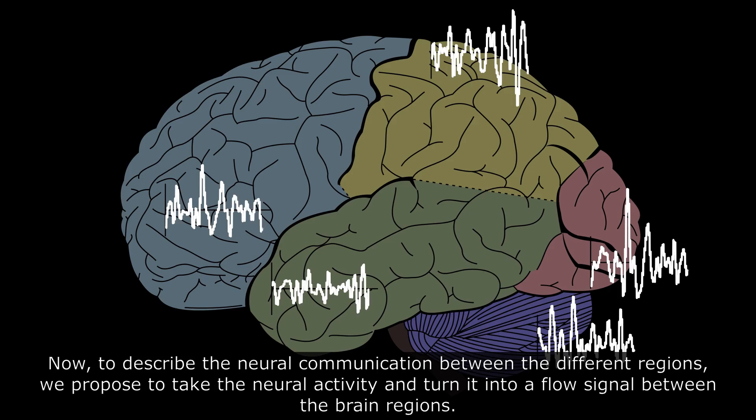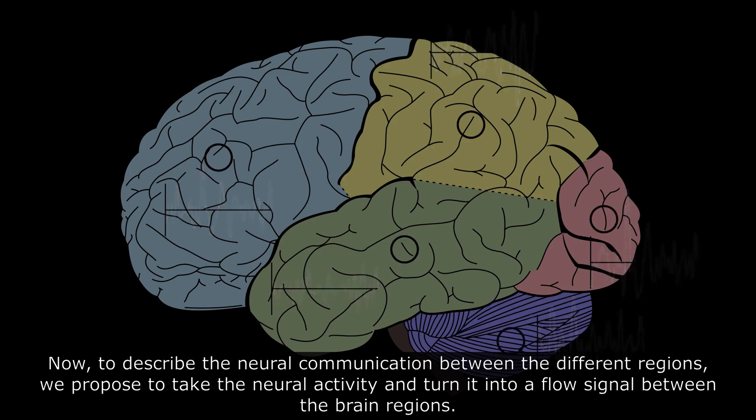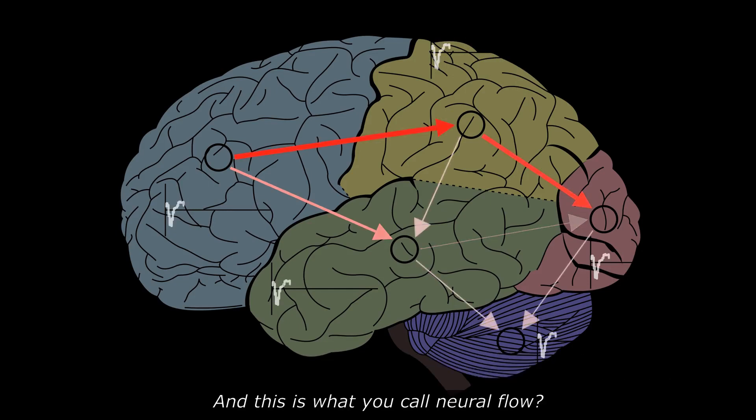Now, to describe the neural communication between the different regions, we propose to take the neural activity and turn it into a flow signal between the brain regions. And this is what you call neural flow? Yeah, exactly.